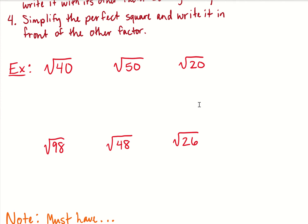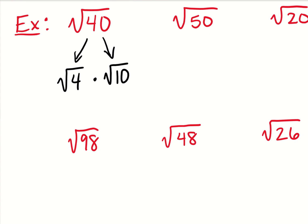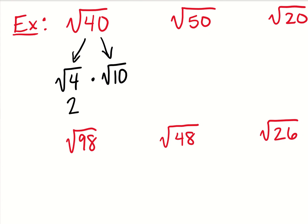First example: the square root of 40. If I divide it by two, I don't get a perfect square. Same thing with three. So I'm going to keep going through factors and try to find one that'll work. I know that I can divide 40 by four, and it just so happens that four is a perfect square. So I'm going to split it into the square root of four times the square root of 10. The square root of four is two, so I rewrite that as two and then bring down my other factor, the square root of 10. This is the simplified version of the square root of 40 — two square roots of 10.